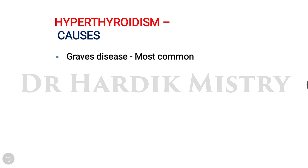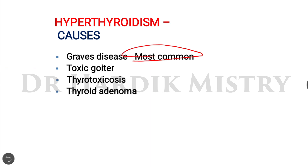The causes of hyperthyroidism include Graves disease, which is the most common cause, along with toxic goiter, thyrotoxicosis, and thyroid adenoma.